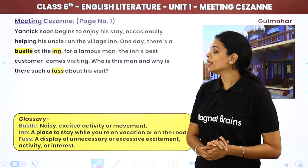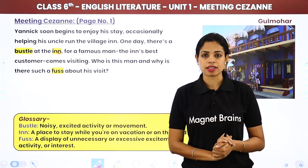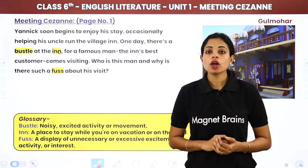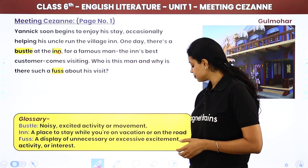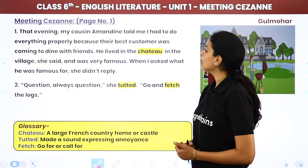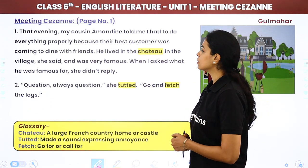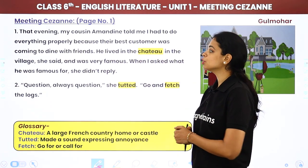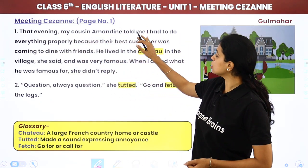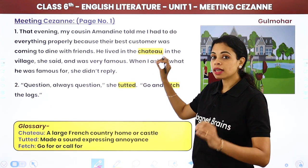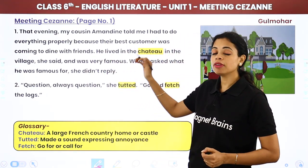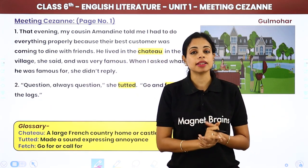That evening, Yannick's cousin Amandine told him that he had to do everything properly because their best customer was coming to dine with friends. She explained that this man lived in the chateau in the village and was very famous.